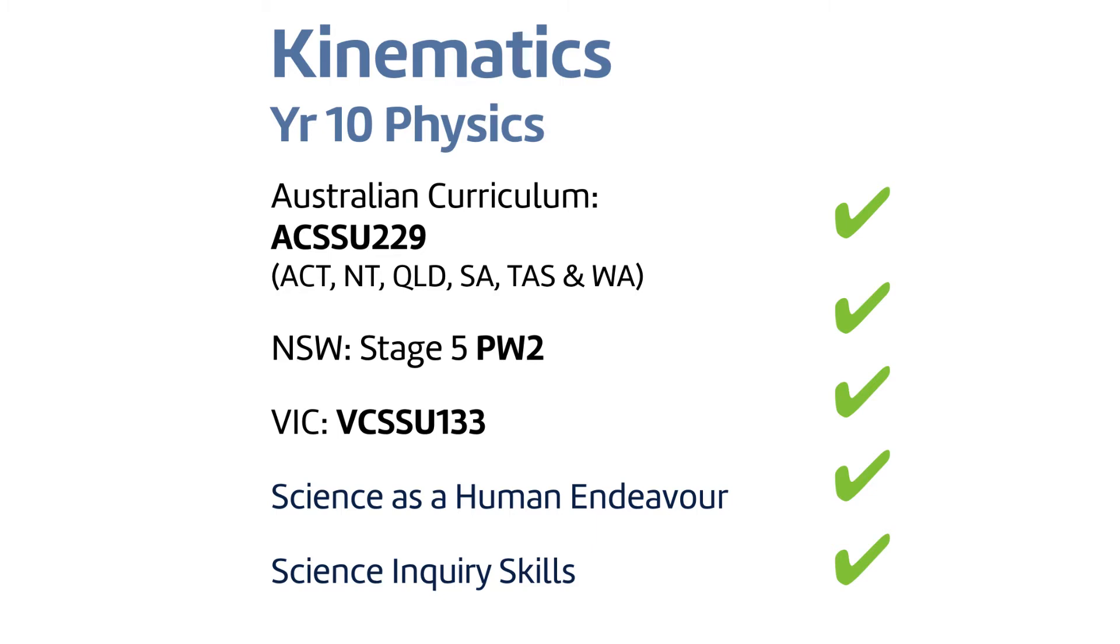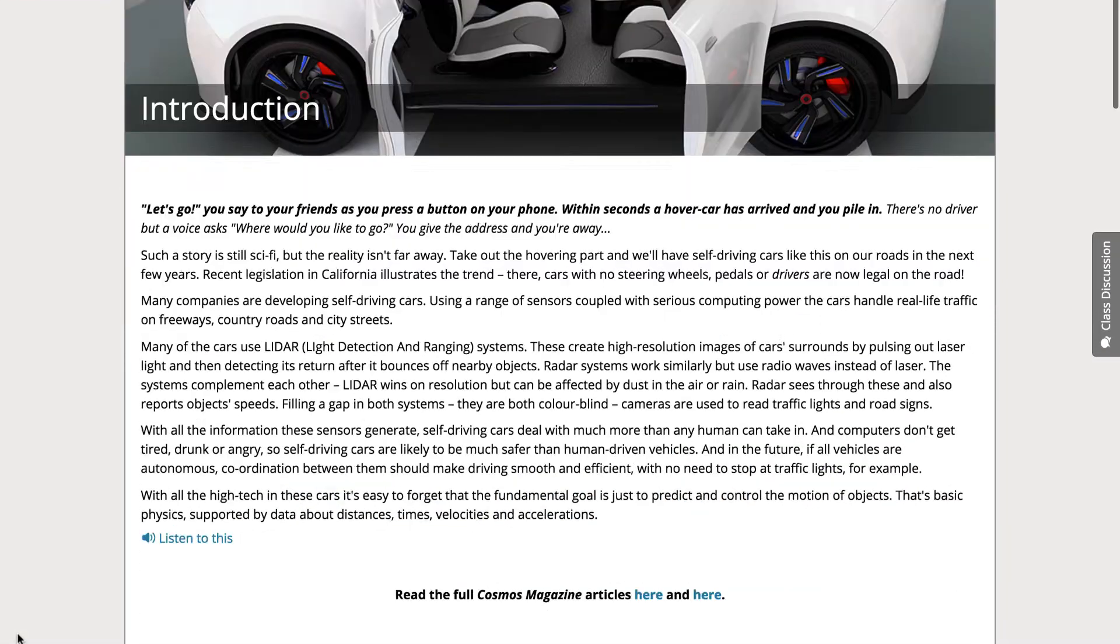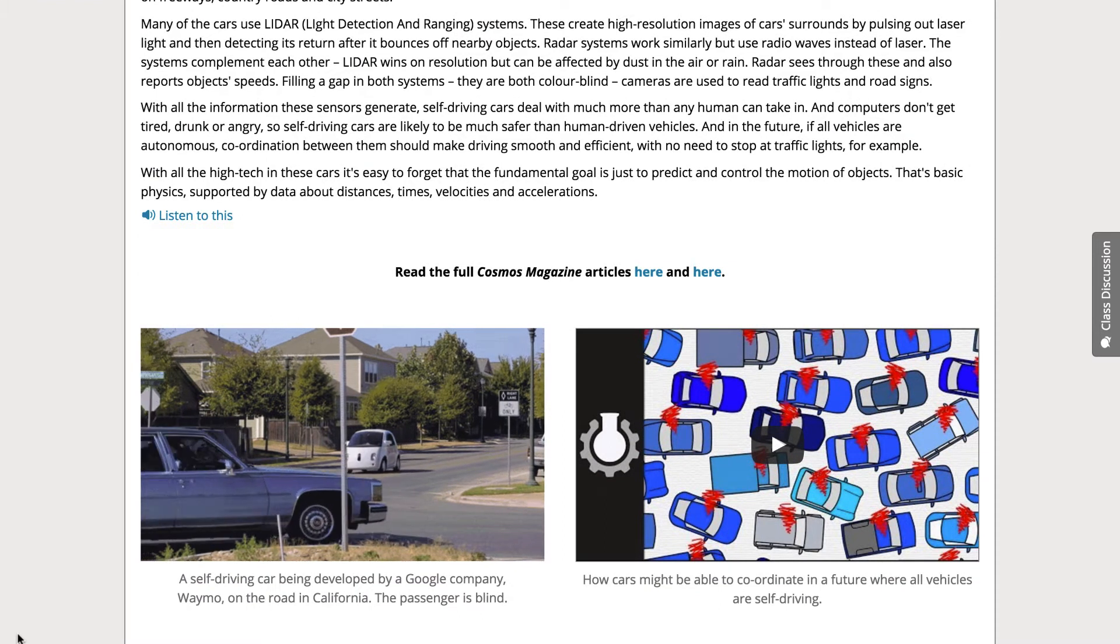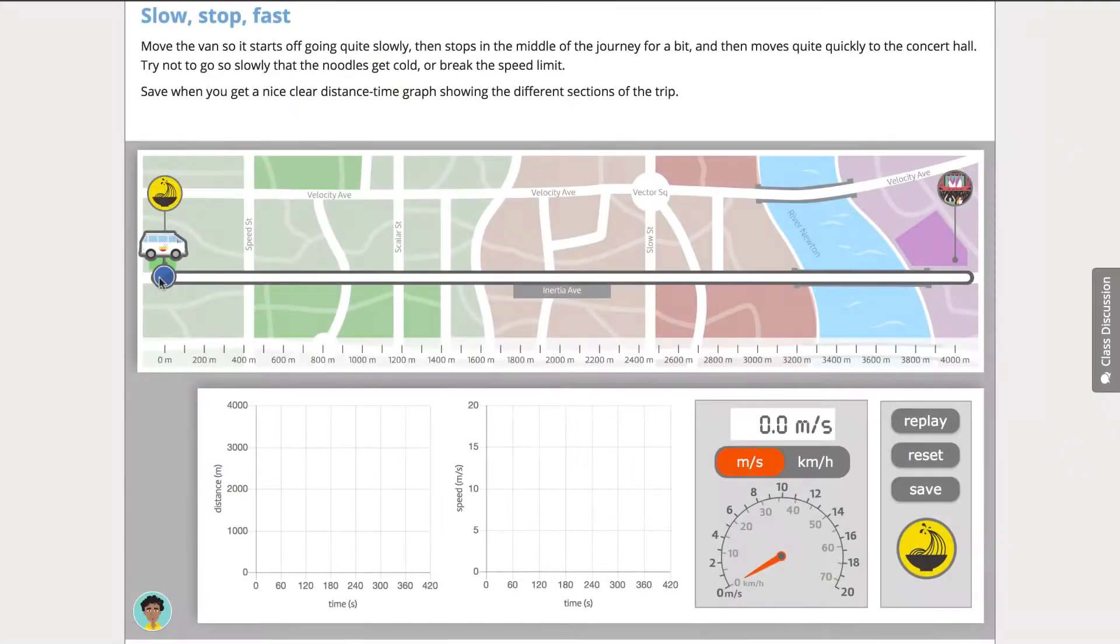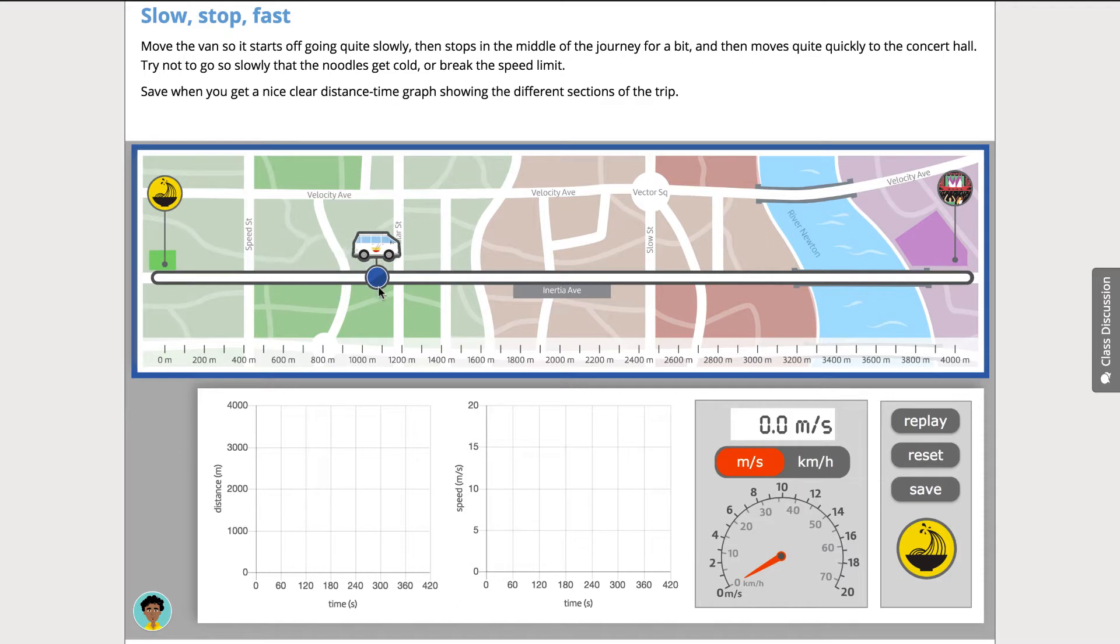The unit aligns with the curriculum codes you can see on the screen. We lead with news about the imminent arrival of self-driving cars, then go immediately into a really cool simulation where students drag a van on a map to make deliveries, automatically generating distance time and speed time graphs.